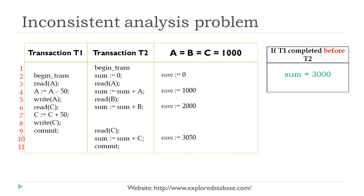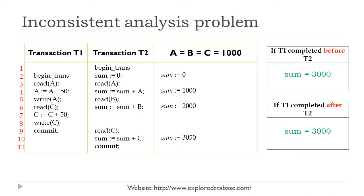Hence the value produced by T2 is 3050 instead of 3000. If these two transactions had executed serially — all instructions from T1 then T2, or T2 then T1 — the value produced would be 3000. Due to the interleaved instructions where T1 writes a new value that is then consumed by T2, the sum produced by T2 is wrong. This is called the inconsistent analysis problem.